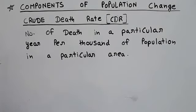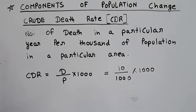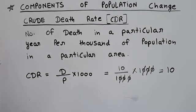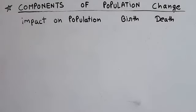Crude Death Rate (CDR) is the number of deaths in a particular year per thousand of population in a particular area. The formula is: D divided by P, multiplied by 1000. Example: 10 deaths in a region with mid-year population of 1000 gives CDR of 10 — meaning every year, 10 out of 1000 people lose their lives. CDR helps calculate the mortality of any region.